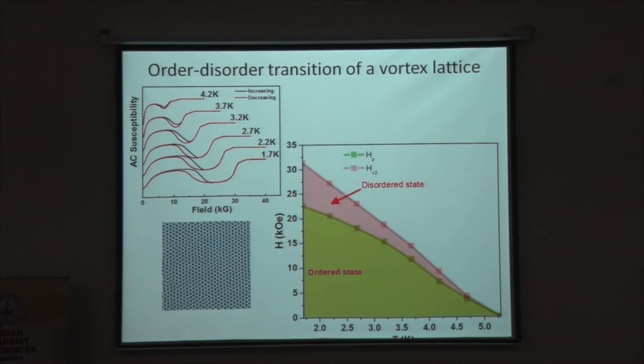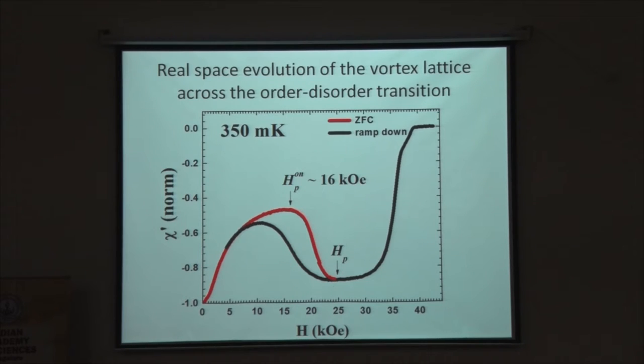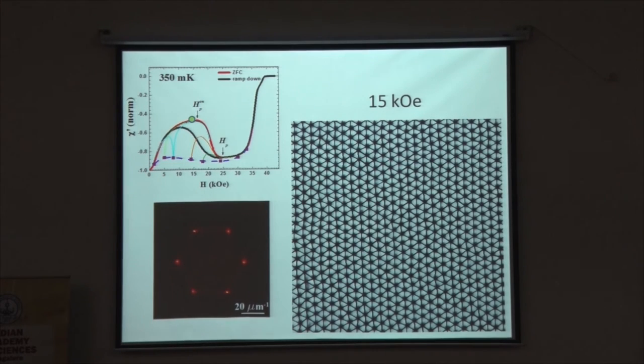This is typically the phase diagram as a function of magnetic field and temperature. You have this ordered state here. If you increase temperature at a fixed field, you go into a disordered state. If you increase magnetic field, you also go into a disordered state. This is something that is known for quite some time, and there was a group in TIFR which has studied this for many years. The signature of the melting or this disordering you can see from susceptibility. For example, the susceptibility increases and then at a characteristic magnetic field, it suddenly crashes. This is the susceptibility measured at 50 mK. This crashing of the susceptibility is what is associated with the order-disorder transition. What we will do now is to track what happens microscopically to the vortex lattice as you go across this order-disorder transition.